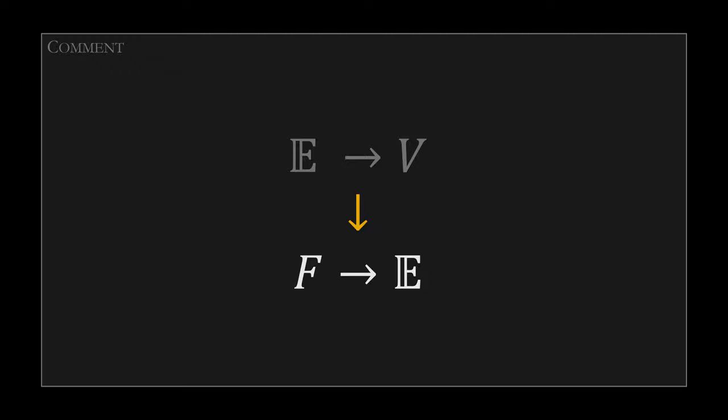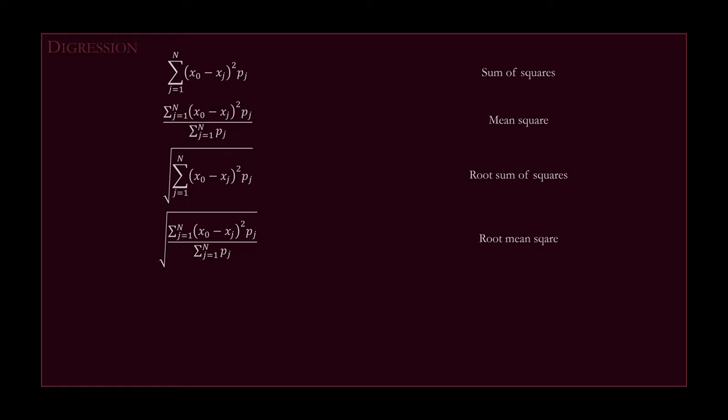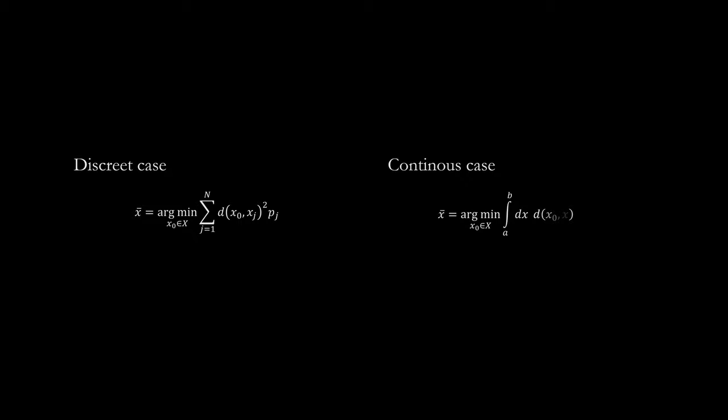This approach reverses the conventional order in which descriptive statistics are defined. Usually, the mean is taken as primary and the variance is introduced as the average square of the deviations from the mean. Here we calculate the Fréchet function — which is actually the modified variance calculated around each point in the domain — and the point that minimizes this function is considered the mean. It does not matter whether you use sum of squares, mean square, root sum of squares, or root mean square, since the quadratic function is strictly monotonic for positive arguments — they all are minimized by the same argument. For continuous data, weighting factors (probabilities) are replaced with a probability density function and discrete summation turns into integration.